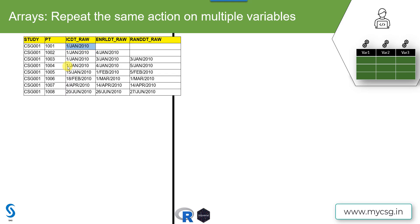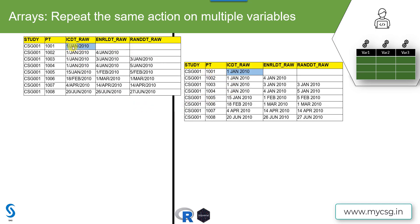Let's say we have an input dataset with data for a few patients containing three date variables: the informed consent date, enrollment date, and randomization date. The date variables have the structure of a date followed by a three-character month followed by a four-digit year, with these components separated by hyphens. We want to replace those hyphens with a space on all three variables across all the rows.